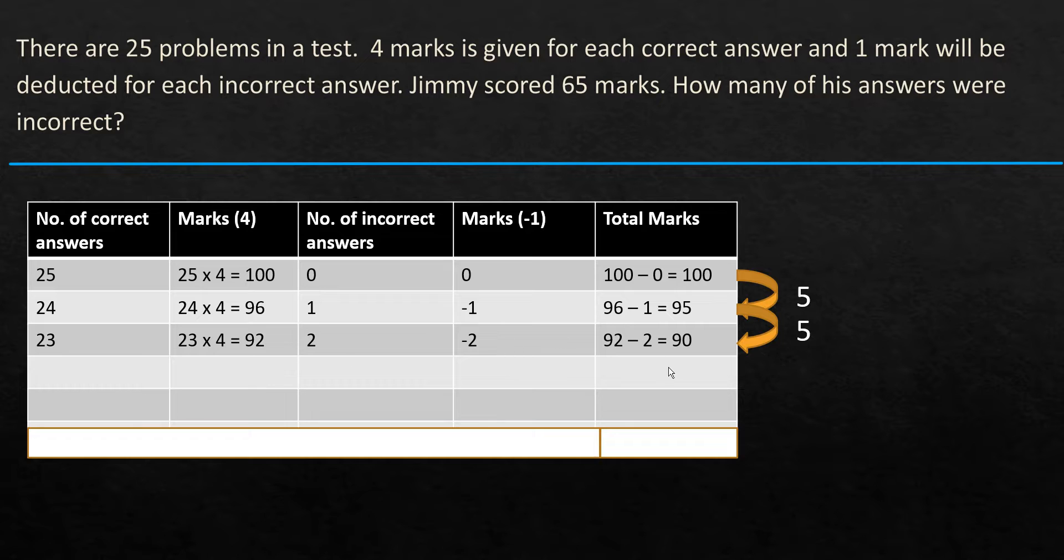We don't want to keep writing everything. So what we are going to do is first write down the correct or the actual marks scored by Jimmy, which is 65. Now, from 90, we have to keep reducing 5, 5, 5 up to 65. So what we need to figure out is how many 5s are there between these two. So how many 5s should be reduced from 90, so we get 65.